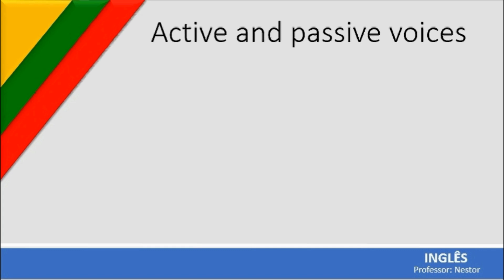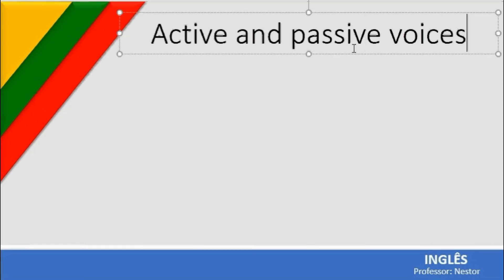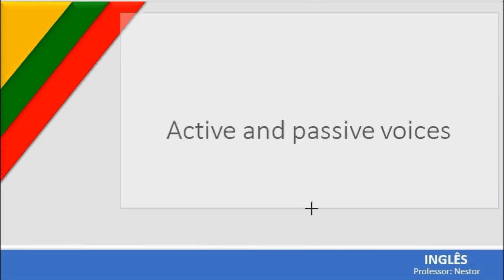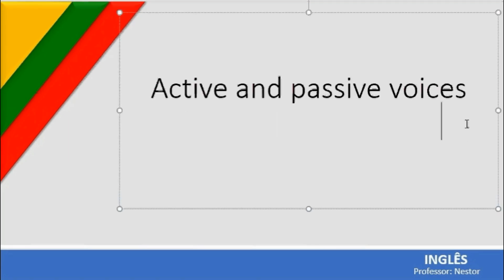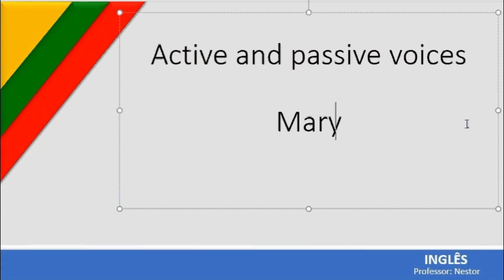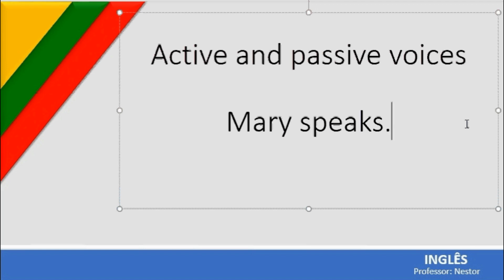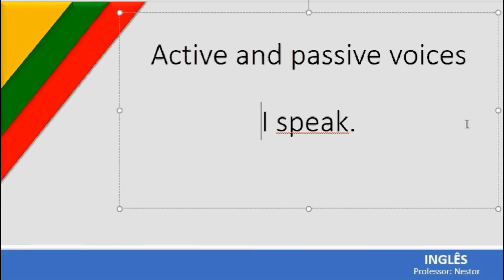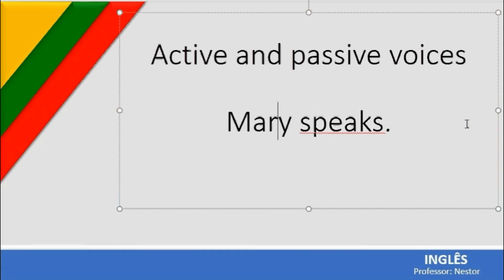Active and passive voices — vozes ativas e vozes passivas. Do you remember this? When do I have an active voice? For example: 'Mary speaks' — Mary fala. We have the verb 'speaks' and the subject 'Mary.' Mary is performing an action. Whenever the subject is doing something, we say the voice is active.